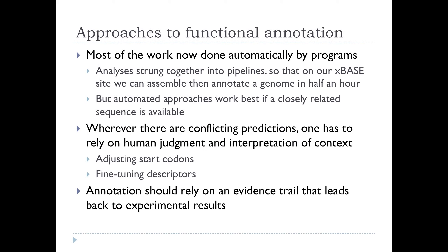Most of the work is automatically done by programs. You can assemble and annotate a genome in half an hour with various pipelines. These automated approaches work fairly well if you've got a very closely related sequence, but if you've got something that's never been seen before and the closest relatives are very distant in terms of genes and proteins, you're going to be in a much less certain state in terms of annotation. If you're going to do this properly you have to rely on human judgment and interpretation.